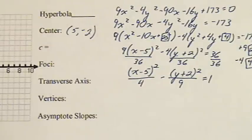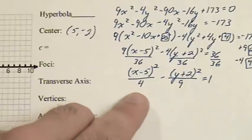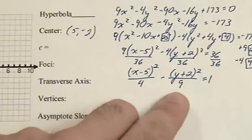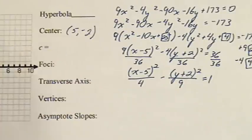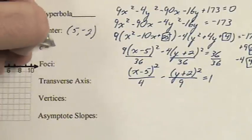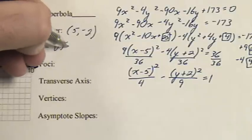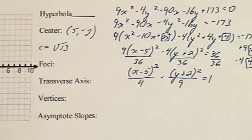For a hyperbola, we add a squared and b squared. a squared is 4, b squared is 9, a squared plus b squared is 13. So c is the square root of 13.